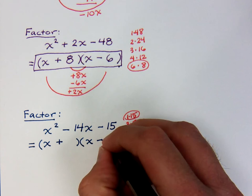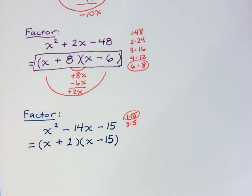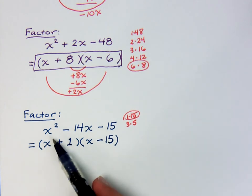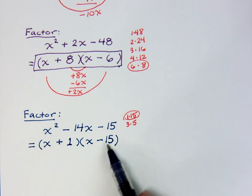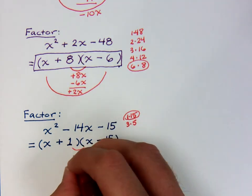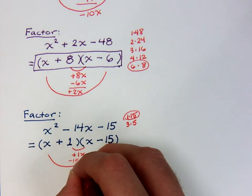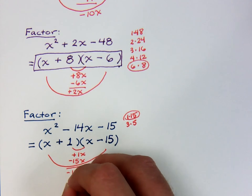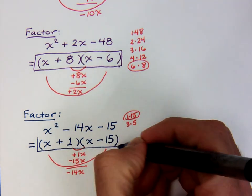And I said we wanted the larger number to be the negative one. Because if I make the larger guy negative, the 15 is negative and the 1 is positive. Look what happens when we check our work. X times x is x². Positive 1 times negative 15 is negative 15. Inside is a plus 1x. Outside is negative 15x. And you see that the negative number is larger. You'll keep the sign of that guy. So it's a negative 14x. So our answer is checked out.